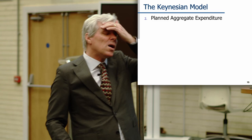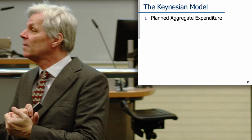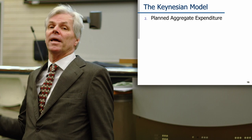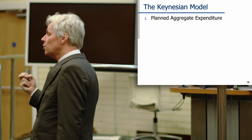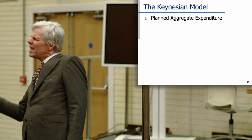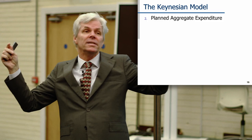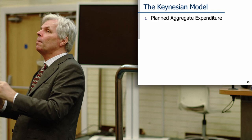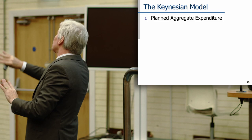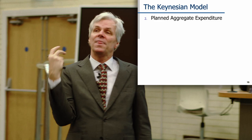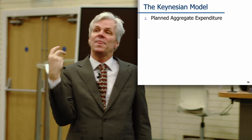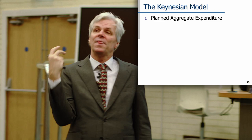Our basic story is that recessions come because people aren't buying enough. So the first thing we need to do is say: well, what are people buying? The core thing we're trying to capture is how much stuff people are buying. We're going to ignore everything else. The core concept is planned aggregate expenditure — how much do we plan to spend? That's going to be the core of this story. Prices are set — we know what the price of the haircut is — and now we just say how many haircuts do you want?